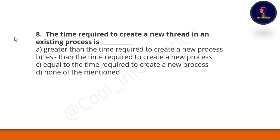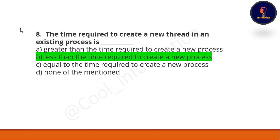Question 8: the time required to create a new thread in an existing process is — Option A: greater than the time required to create a new process. Option B: less than the time required to create a new process. Option C: equal to the time required to create a new process. Option D: none of the above. The correct option is B — less than the time required to create a new process.